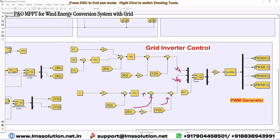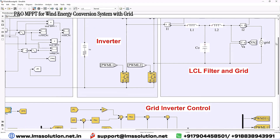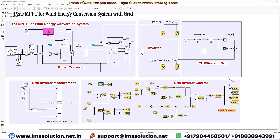The Vd and Vq references are converted back into alpha-beta form. Only the alpha component is taken and processed via a PWM generator, which generates the switching pulses for the grid-side inverter. These pulses control the grid inverter for injecting power from the wind energy conversion system into the grid.